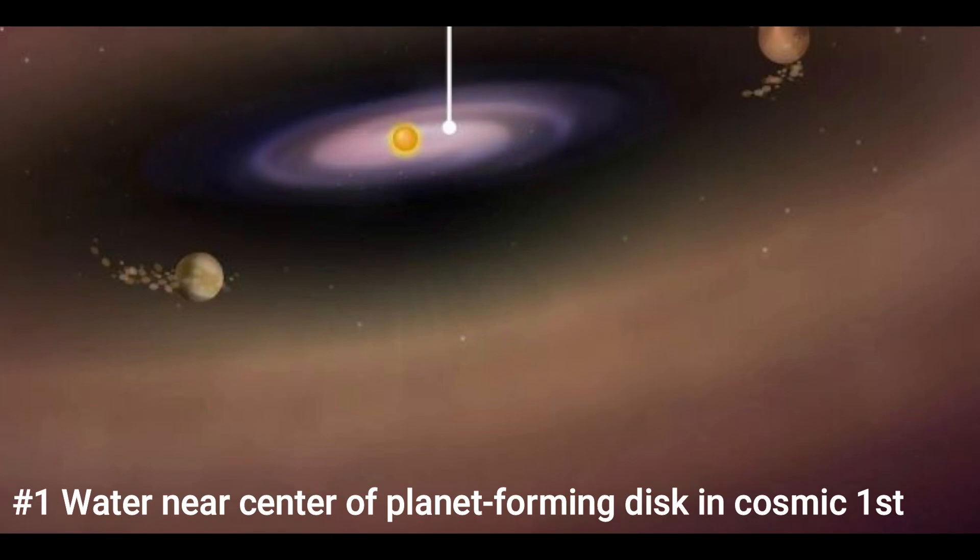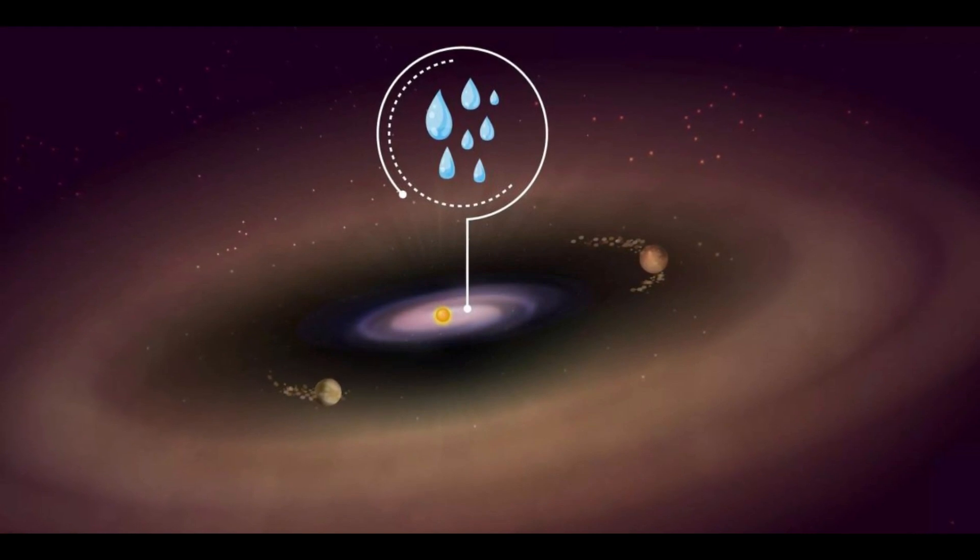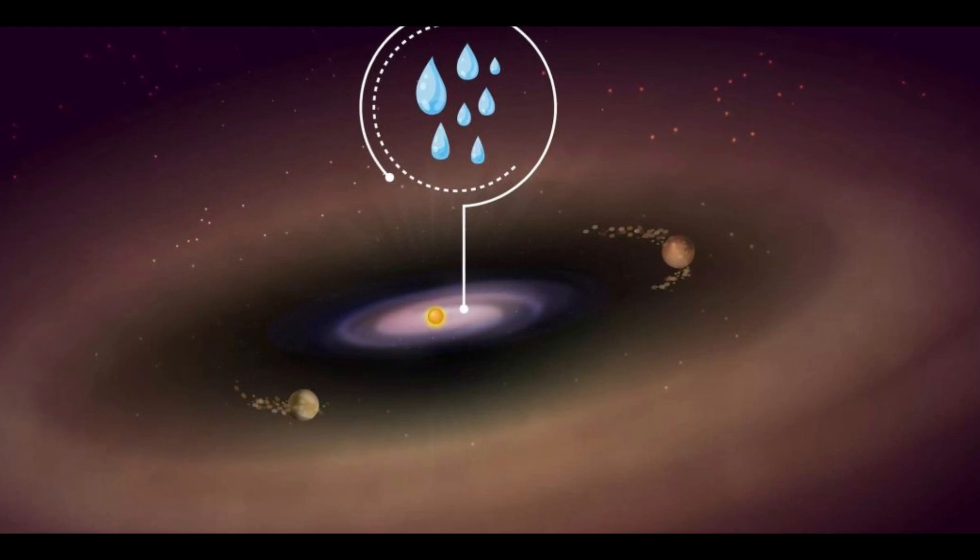Number 1. Water near center of planet-forming disk in cosmic first. According to a recent study, rocky extraterrestrial worlds may have substantial amounts of water from the moment they develop, which is a first for astronomers.